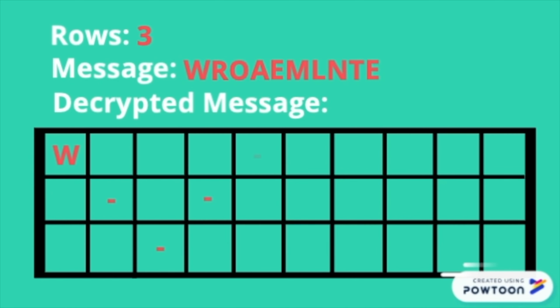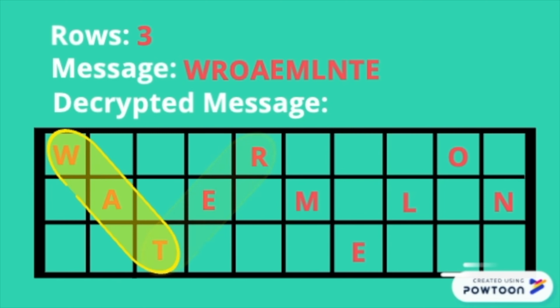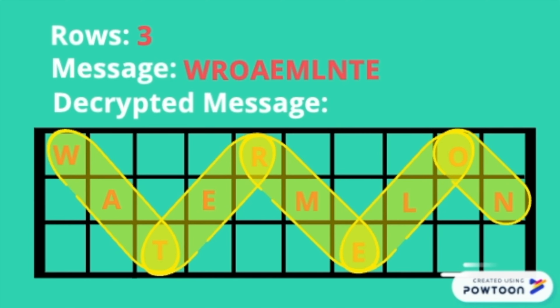From there, draw dashes in the table in a zigzag pattern as shown. Then add the letters from the message where the dashes are, to the table from left to right starting at the top row. To get the final message, read the zigzag pattern — the message here is 'watermelon'.